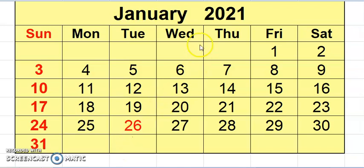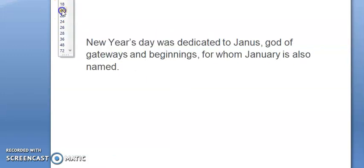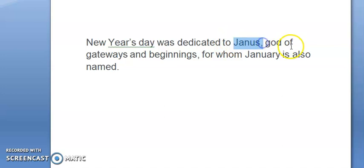So next year is 2021. The first month of the year is called January. The name January comes from the word Janus. In the pre-Christian Roman Julian calendar, the first day of the year was dedicated to Janus, God of new things, God of new openings, new beginnings.